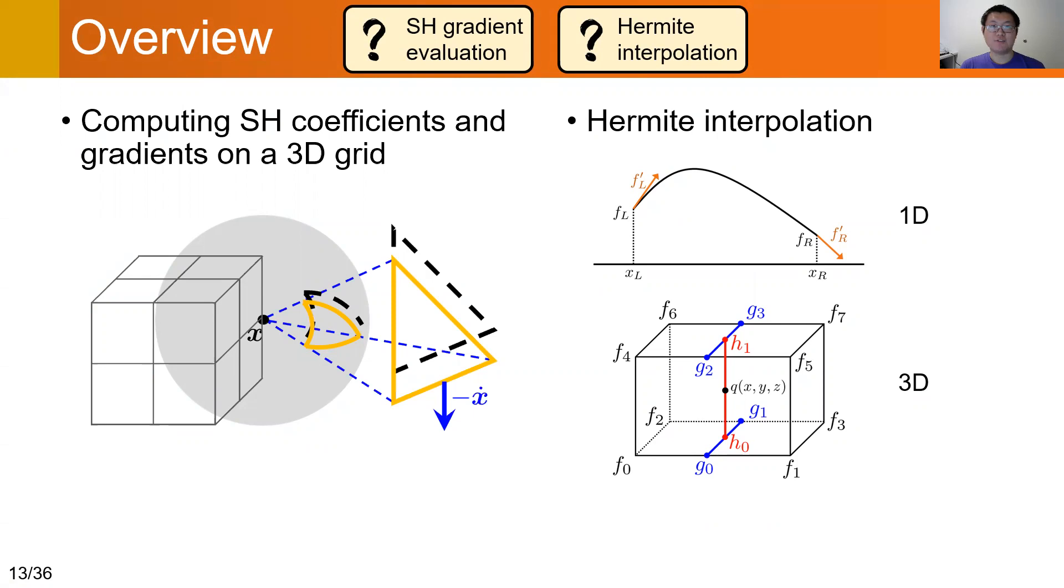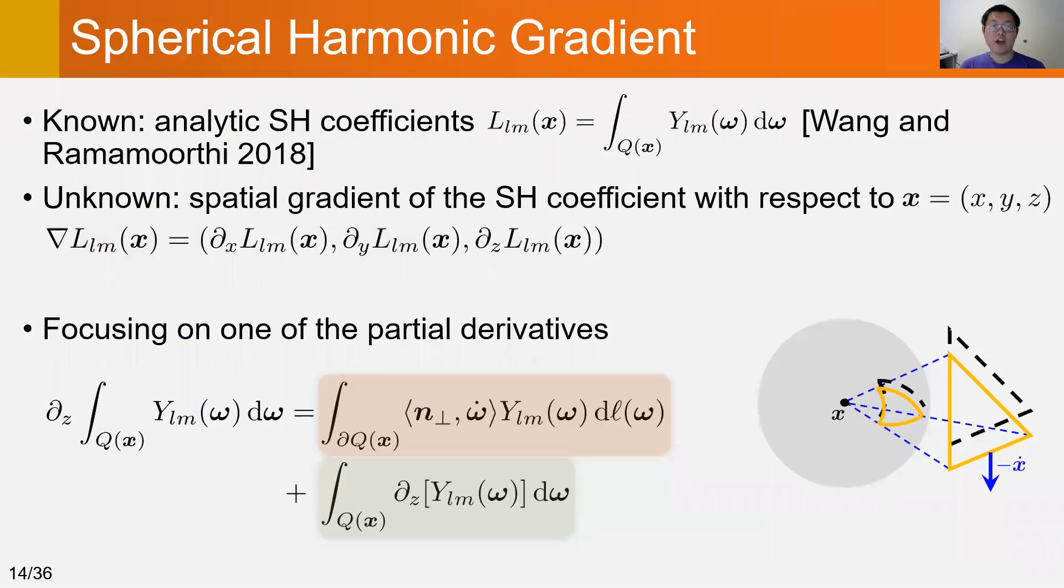Let's start with the first step. We have already known how to compute SH coefficients analytically from prior works. Now, we need to further derive their first order derivatives with respect to the shading point position.